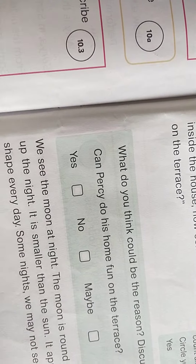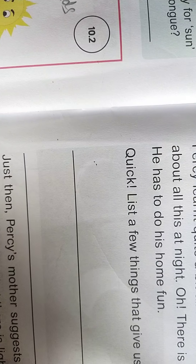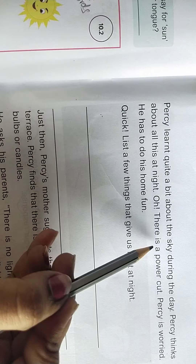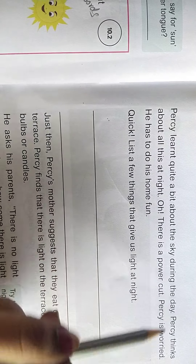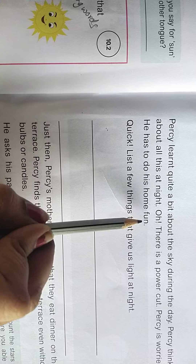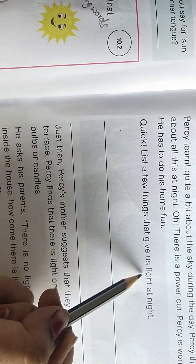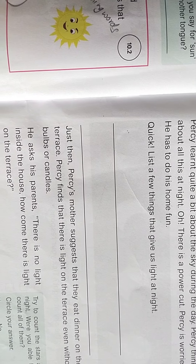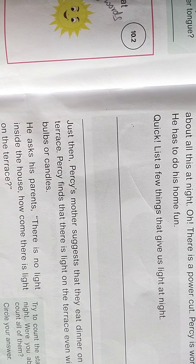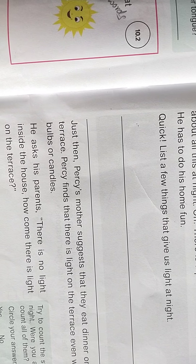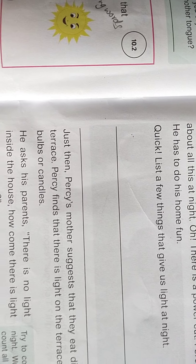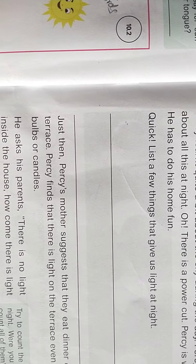Percy learned quite a bit about the sky during the day. Percy thinks about all this at night. Oh, there is a power cut! Percy is worried - he has to do his homework. List a few things that use light at night. Children, you know at night time if you are having a power cut, for lighting what do you use? We are using a torch light.